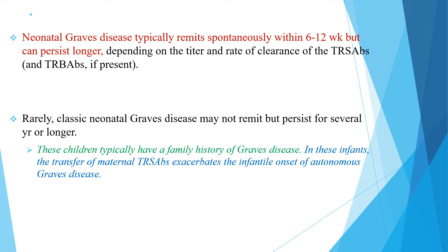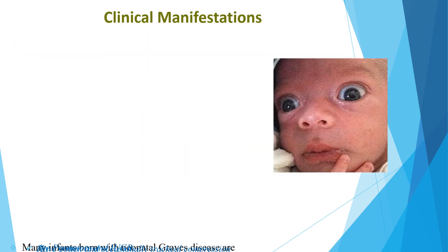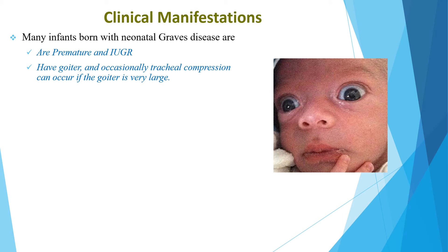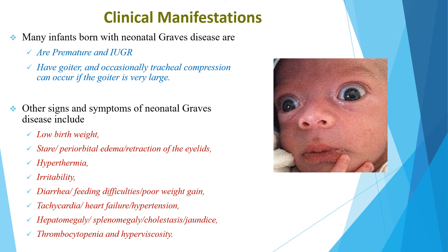Many infants born with neonatal Graves disease are premature and have goiter; occasionally tracheal compression can occur if the goiter is very large. Other signs and symptoms include low birth weight, stare, periorbital edema, lid retraction, hyperthermia, irritability, diarrhea, feeding difficulty, and poor weight gain. Tachycardia, heart failure, hypertension, organomegaly, thrombocytopenia, and hyperviscosity can also be seen.